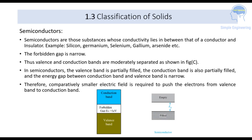Next are semiconductors. Semiconductors are substances whose conductivity lies in between that of a conductor and an insulator. Examples are silicon, germanium, selenium, gallium arsenide — all these are semiconductors.